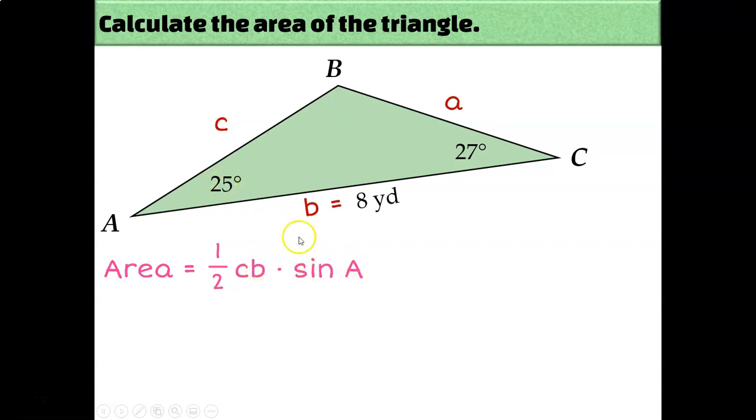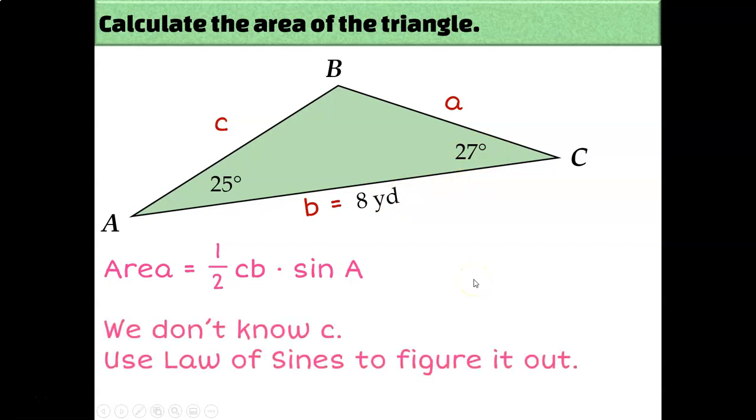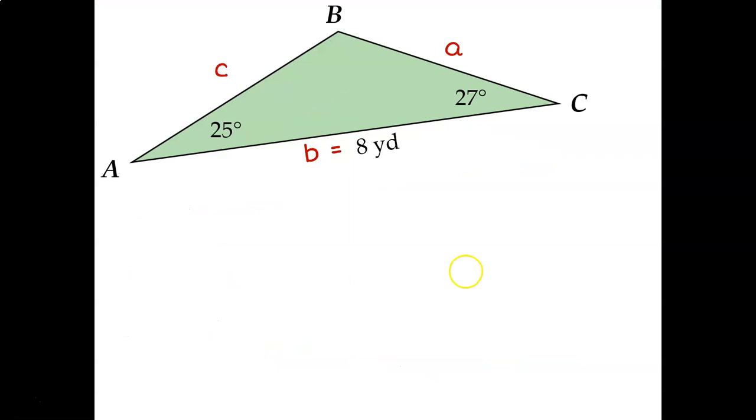So looking at my area formula, I know two of the three things that I need. I know the measure of angle A, and I know the length of little b. What I don't know is the length of little c. Since this is an angle-side-angle situation, I'm going to use the law of sines to calculate the missing side length. But in order to do that, I actually need to start out by calculating the measure of angle B. I know I don't need that for the area formula, but I do need that for the law of sines formula. And it's easy to figure out using the triangle sum formula, subtract 25 and 27 from 180, and we find out that the measure of angle B is 128 degrees.